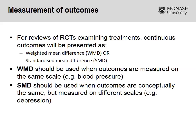For example, one study might measure pain on a scale of 1 to 10, another on 1 to 20, and another on 1 to 50. A standardized mean difference takes those scales and transposes them onto one common scale — for instance, they might all be transposed onto a scale of 1 to 5.